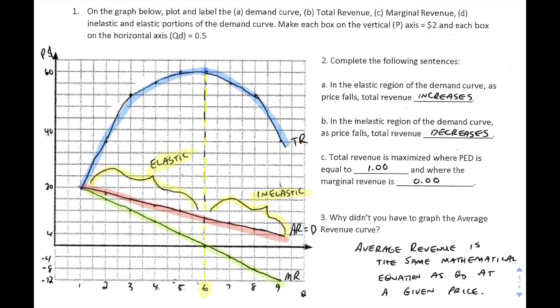In the elastic region of the demand curve as price falls, total revenue increases. It's really important because on a paper three you could be asked about PED and how that affects total revenue. Total revenue is maximized when PED is equal to one and marginal revenue is equal to zero. Those are very important concepts again moving forward for your paper three.